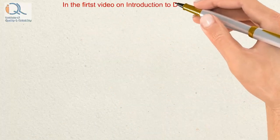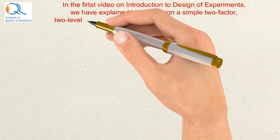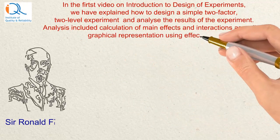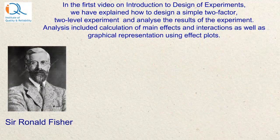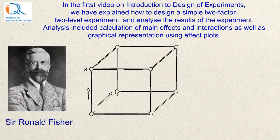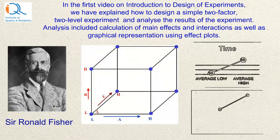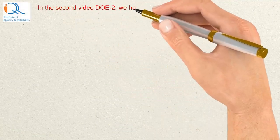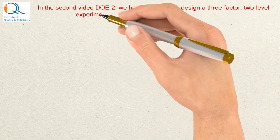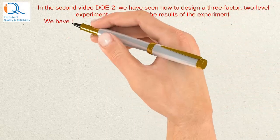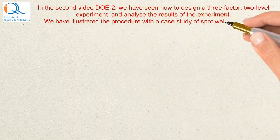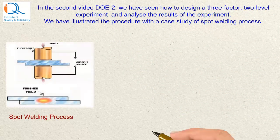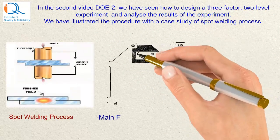In the first video on Introduction to Design of Experiments, we explained how to design a simple two-factor two-level experiment and analyze the results. Analysis included calculation of main effects and interactions. In the second video DOE 2, we designed a three-factor two-level experiment and illustrated the procedure with a case study on spot welding process.